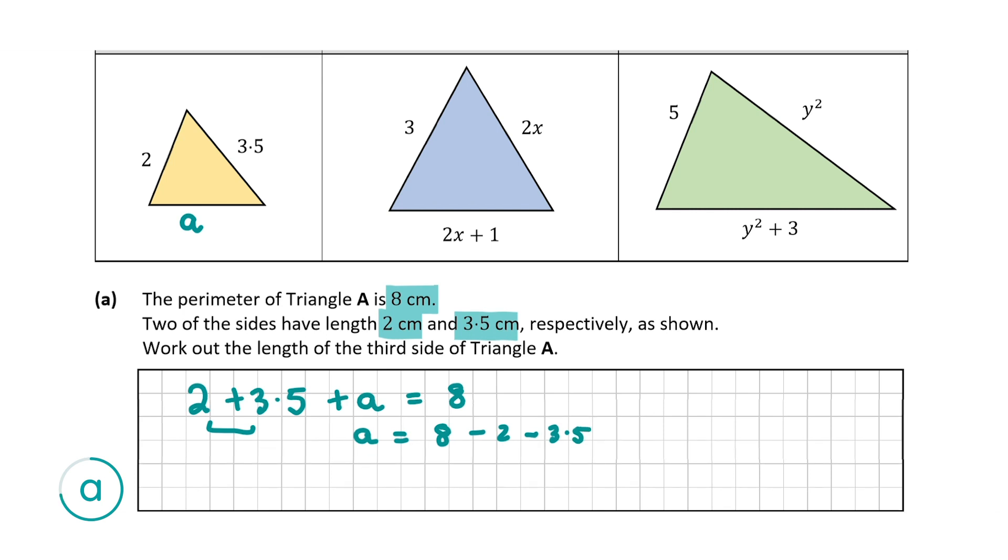So 8 minus 2 is 6 minus 3.5 gives us 2.5. So A is equal to 2.5 centimeters. And that's our final answer for question A and for this question you're going to get five marks.